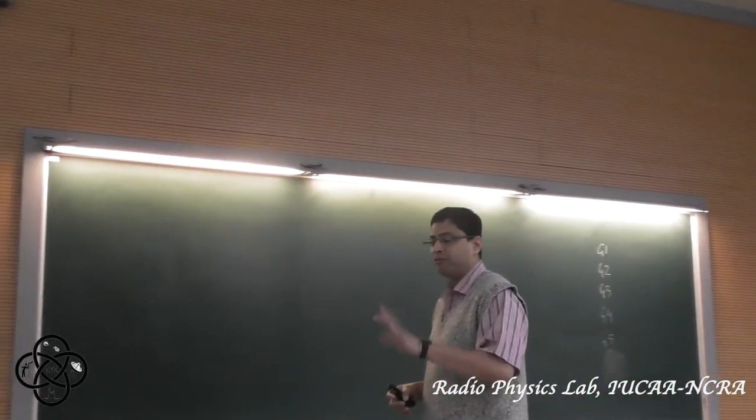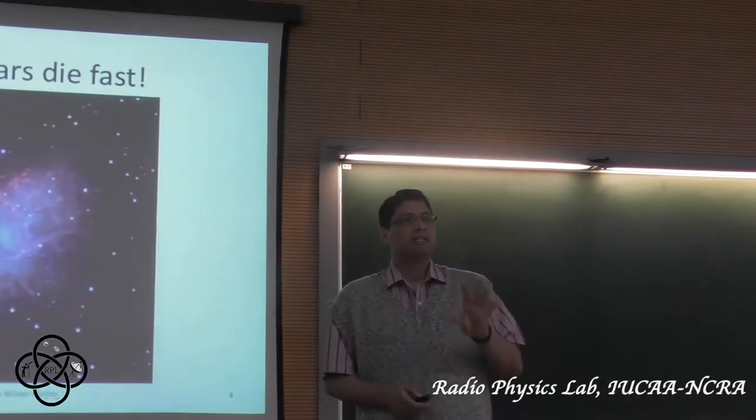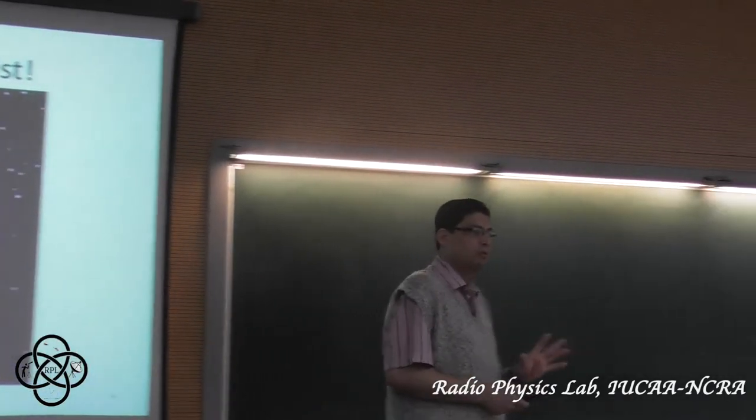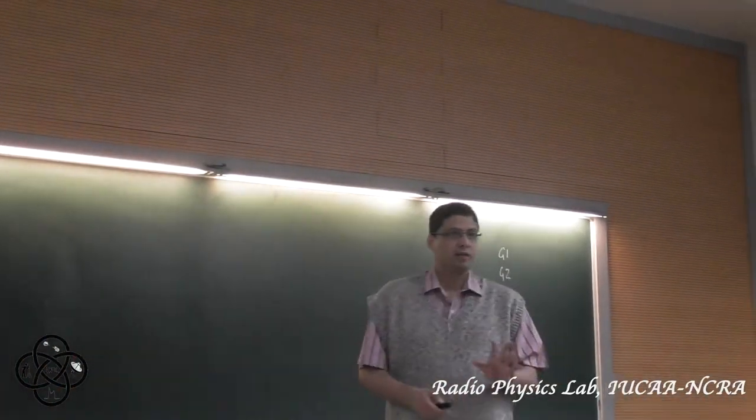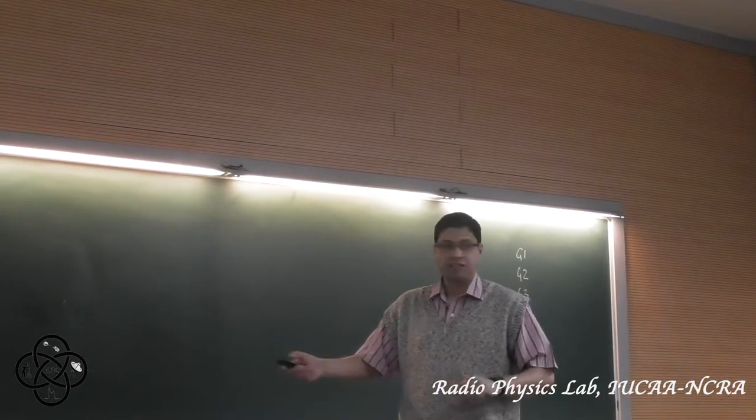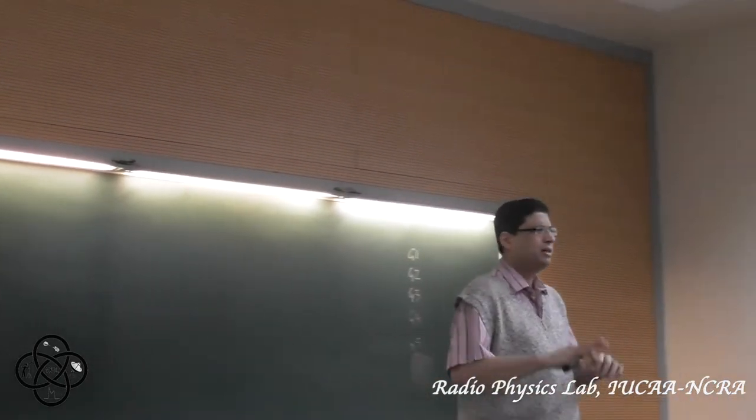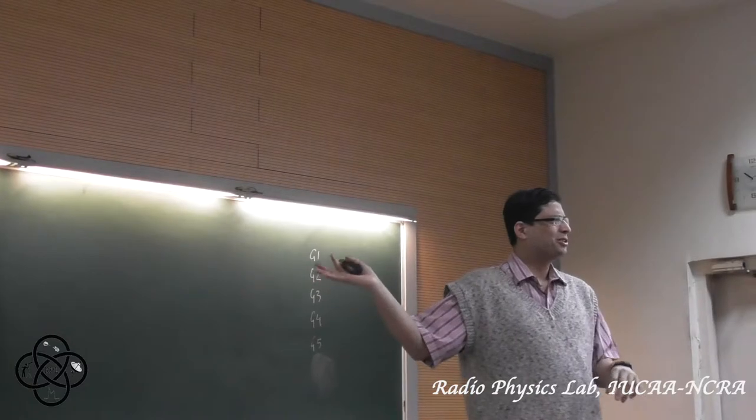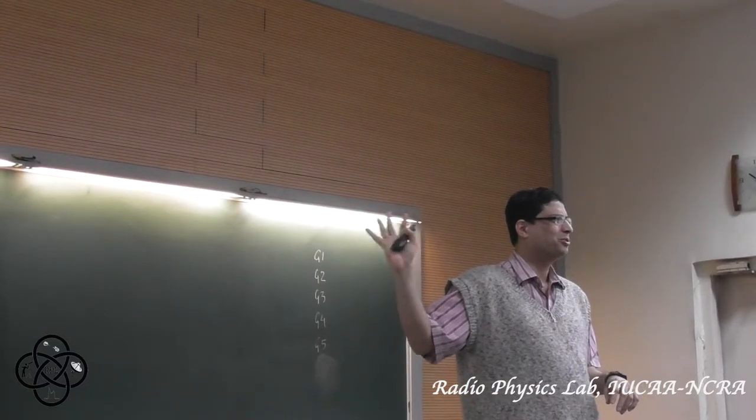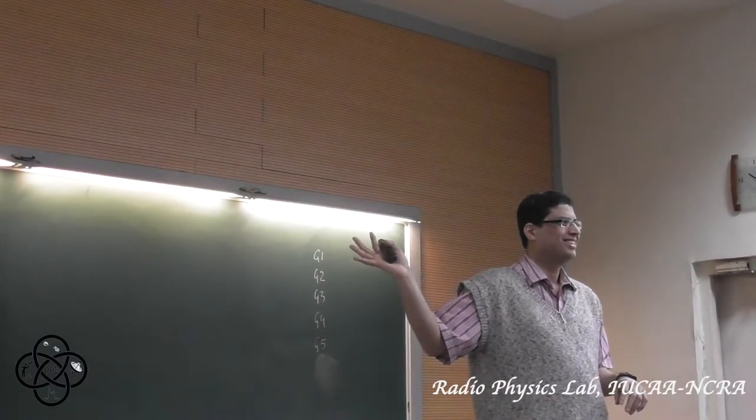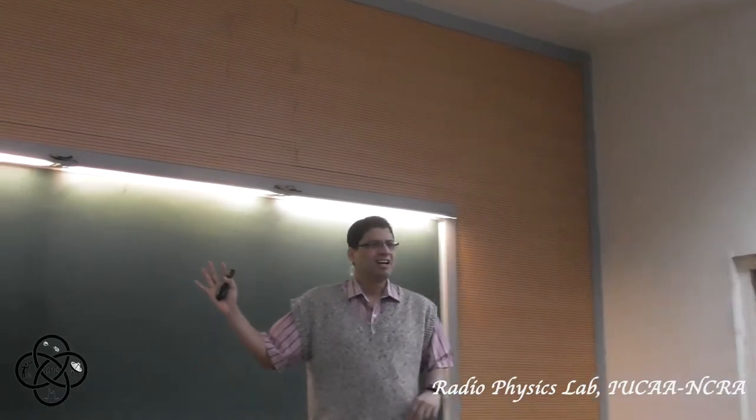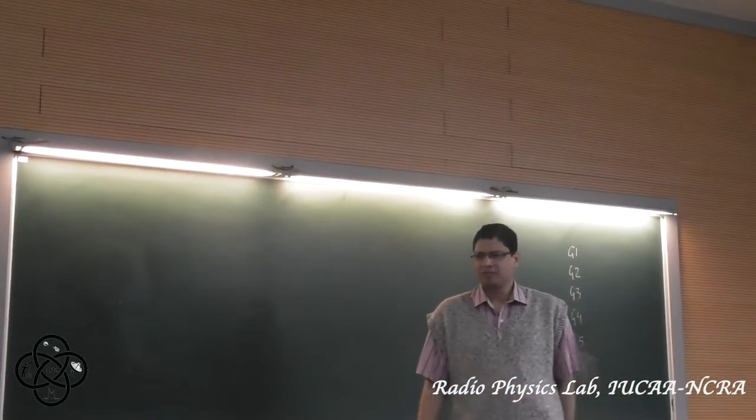But even if a neutron star is not in a binary system, it can still isolatedly produce gravitational waves for the following reason. First of all, of course, this explosion, and how many, is there a discussion of how stars die in this school? Okay, maybe I have a slide on that as well.